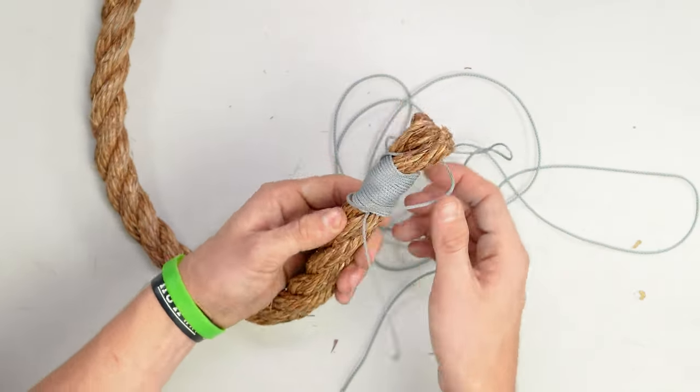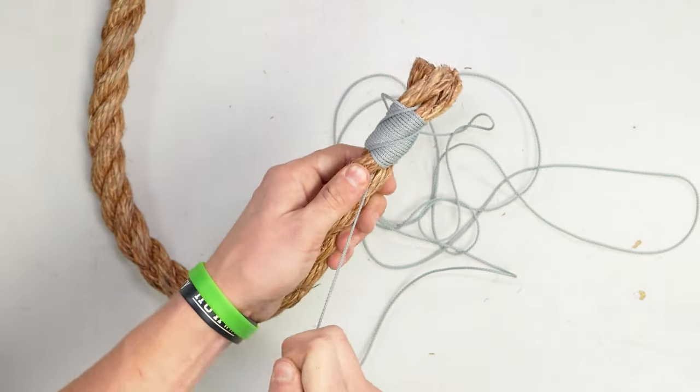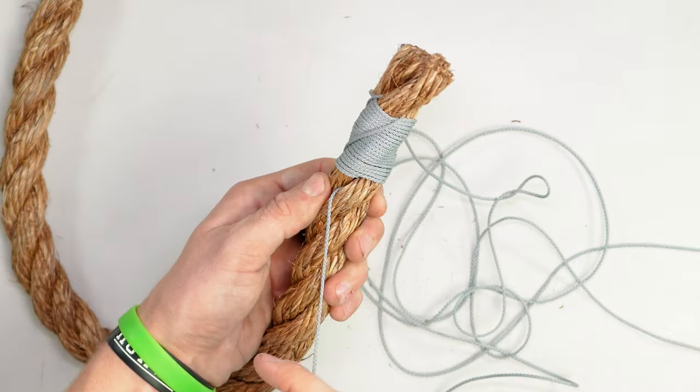Once this bunny ear is around that strand, you can pull this tail snug and it should follow the crevices of the rope.